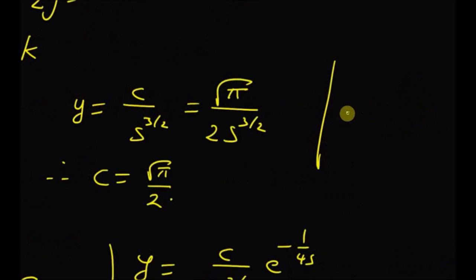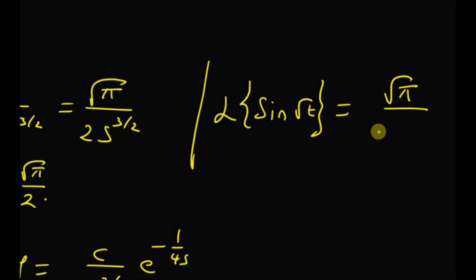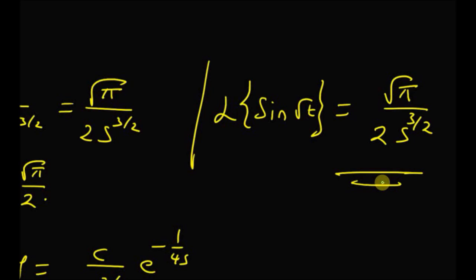Hence, the Laplace transform of sin(√t) is equal to √π / (2s^(3/2)) · e^(−1/(4s)). Thus, we can use a differential equation approach to solve for the Laplace transform of sin(√t).